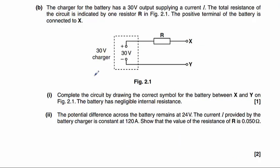Part B shows us a diagram here. The charger for the battery has a 30 volt output supplying a current I. The total resistance of the circuit is integrated by one resistor here, figure 2.1. The positive terminal of the battery here is connected to X. So we need to complete the circuit by drawing our battery between X and Y. The battery has a negligible internal resistance. So the negligible internal resistance part just means we don't need to show the internal resistance. We don't need to worry about it.